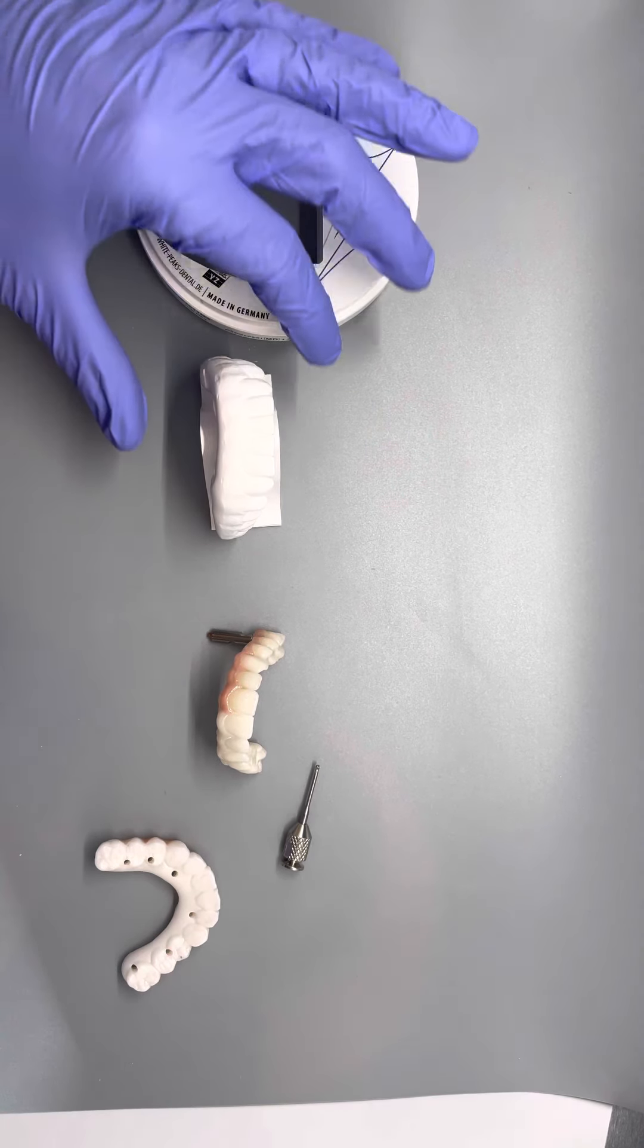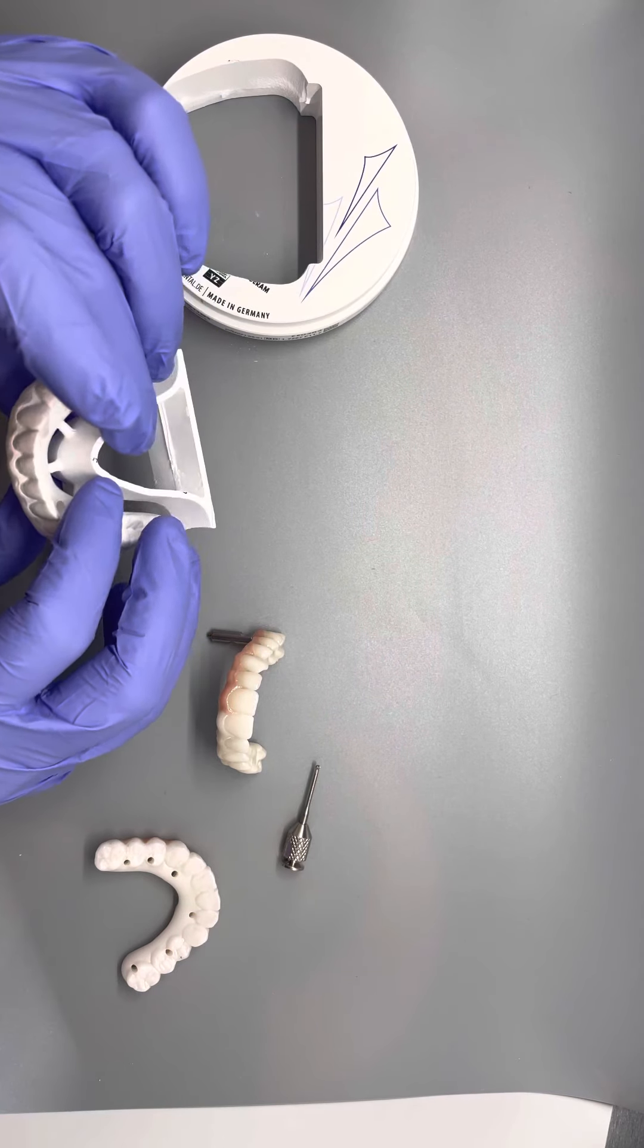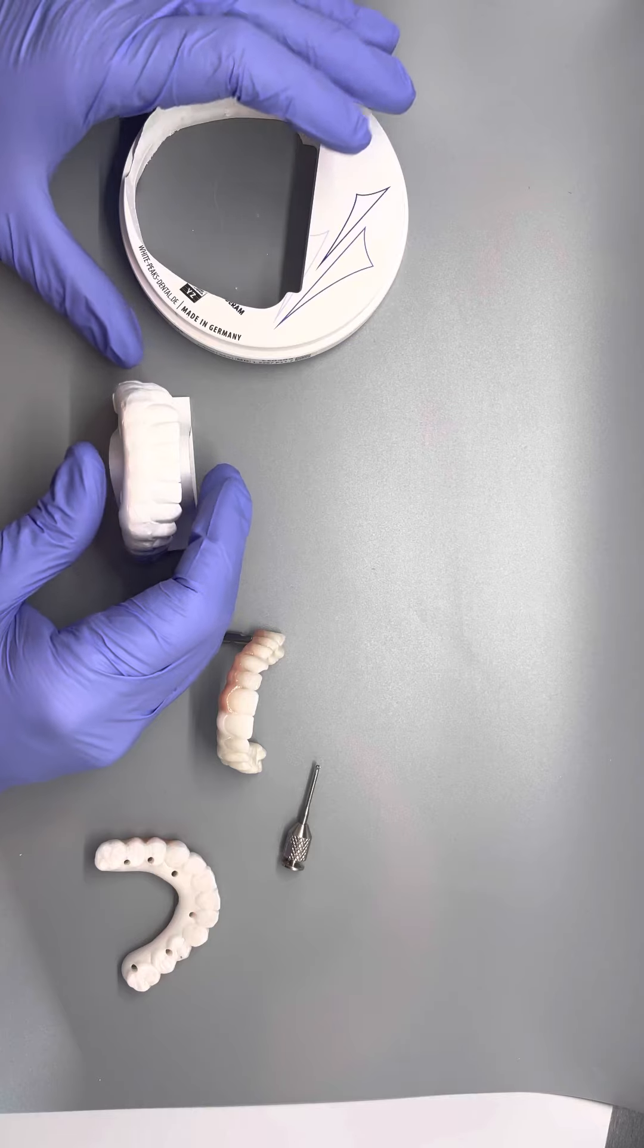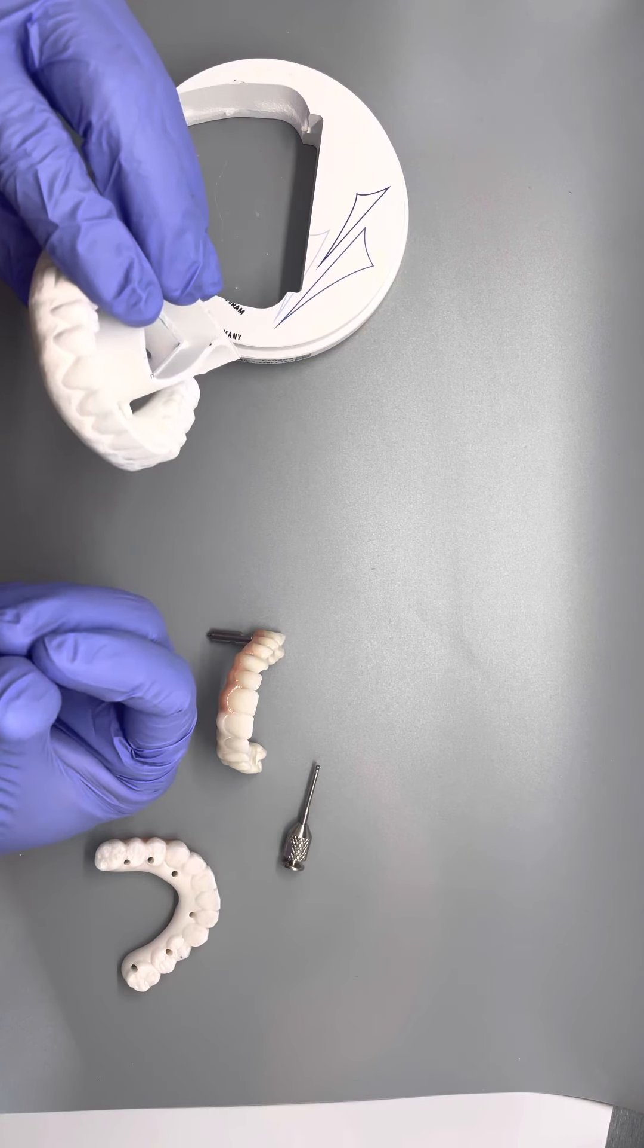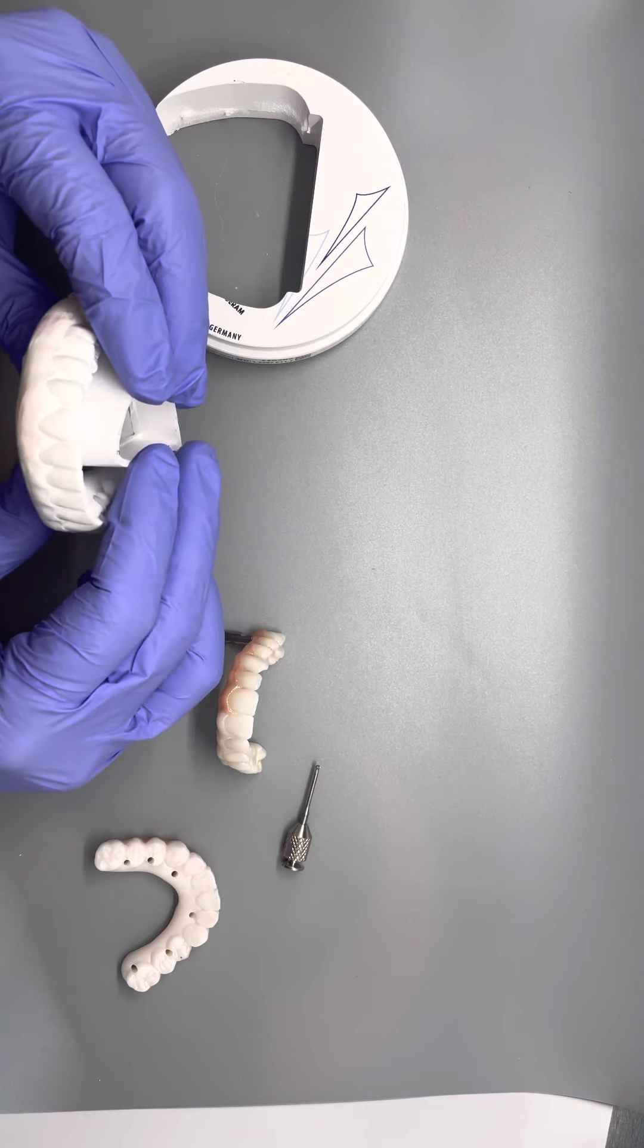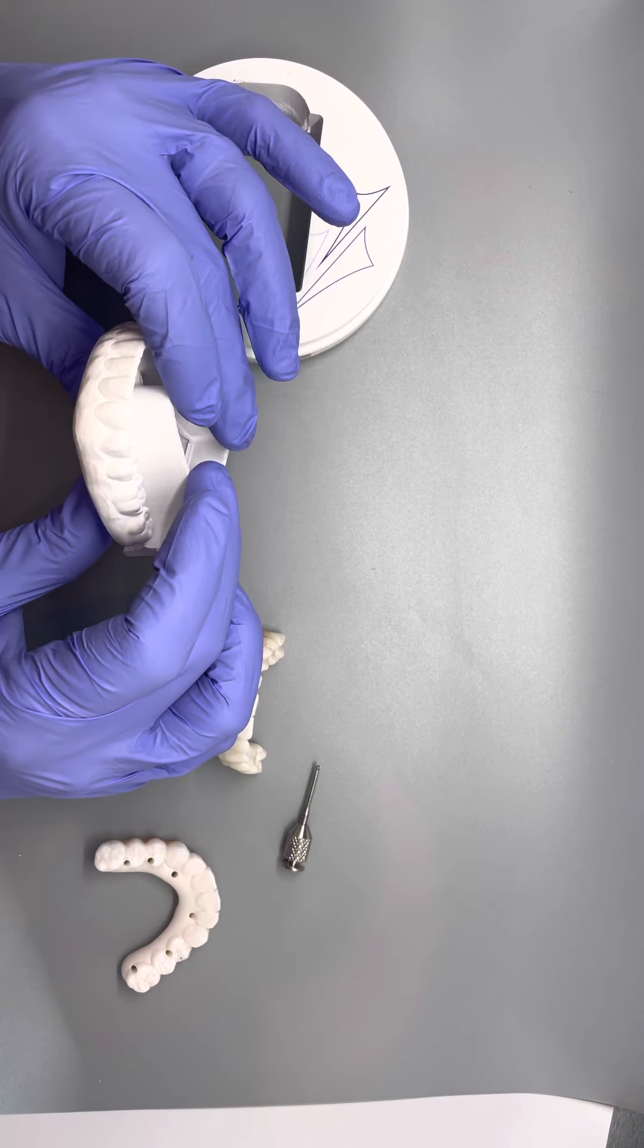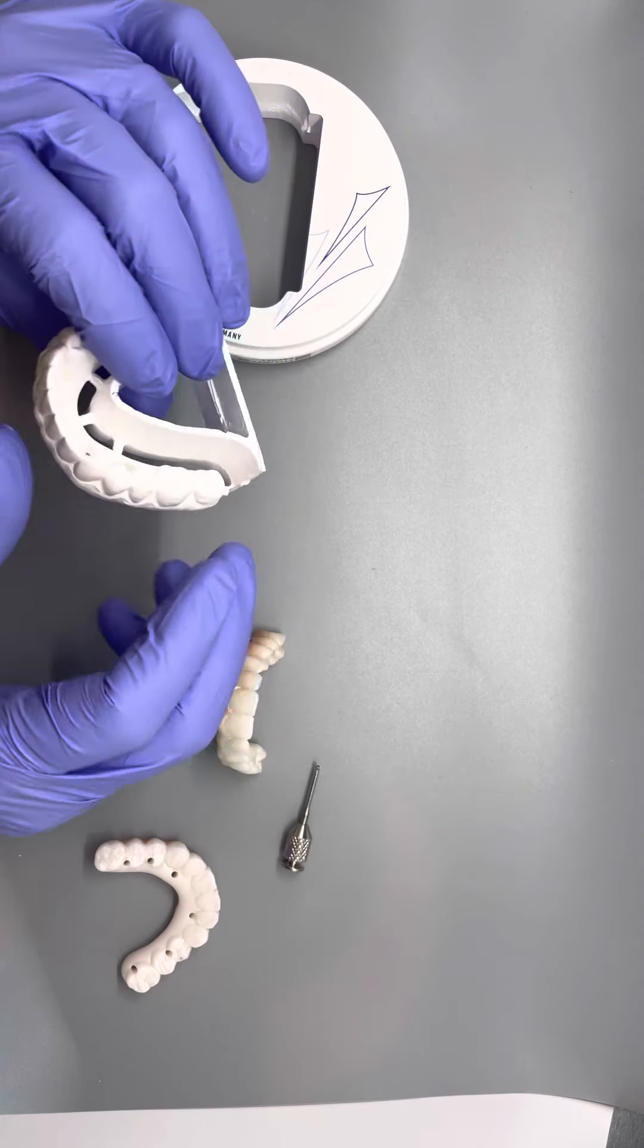So first we mill the screw denture out of this puck right here. You can see how that kind of fits right there, and so you'll notice that it's real white and it is kind of chalky actually. You can scratch this. So in this stage right here it's pretty weak. It is literally like chalk. It is just compressed powder is all that it is.